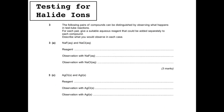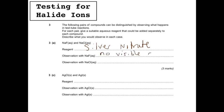Looking at some past exam questions: you need to distinguish sodium fluoride from sodium chloride. The reagent here would be silver nitrate. With sodium fluoride, no precipitate is made because silver fluoride is soluble in water, so you'd observe no visible change. The observation with sodium chloride would be a white precipitate — you can write precipitate as 'PPT' in the exam.